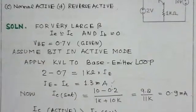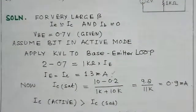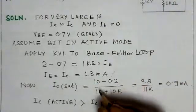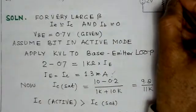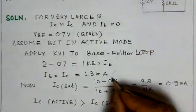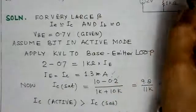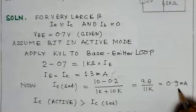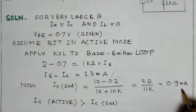Now we can determine what would be the saturation current. IC saturation would be 10 volts DC minus VC on, taken to be 0.2 volts, divided by 1k plus 10k. So 9.8 over 11k gives about 0.9 milliamperes.